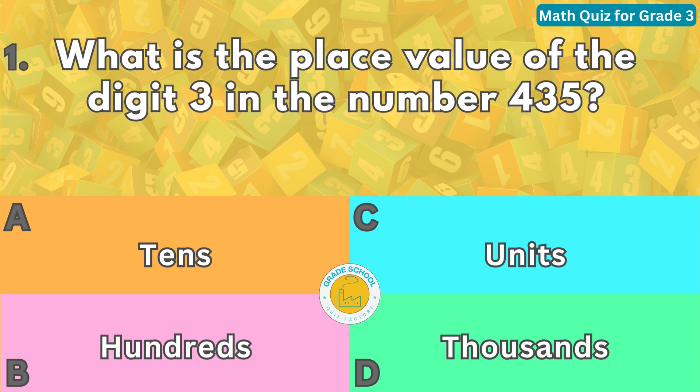Question number one. What is the place value of the digit three in the number 435? The correct answer is letter A. The digit three is in the tens place value.